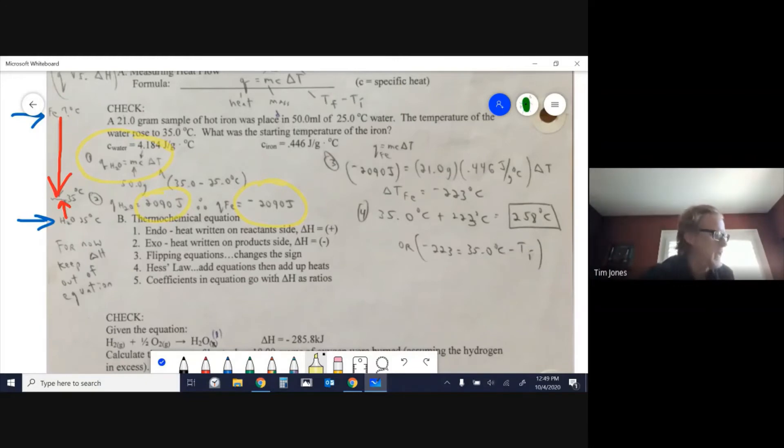This is where you need to be careful - pay attention to which way the heat is moving. Through the water, it's moving in; to the iron, it's moving out so it's negative. Once I know how much heat is leaving the iron, we do q equals mc delta t for the iron. We can find the temperature change - it cooled down 223 degrees.